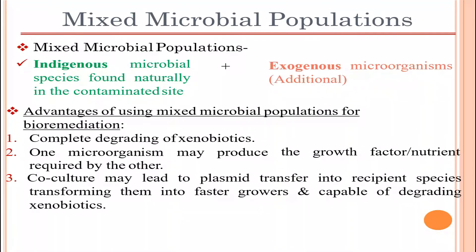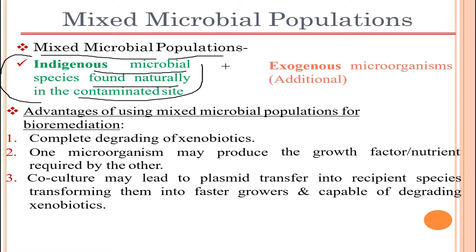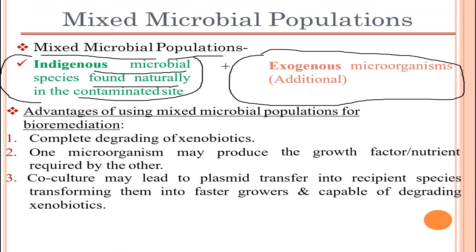Moving on to the mixed microbial population. The mixed microbial population is the combination of indigenous and exogenous microorganisms. Indigenous microbial species are generally found naturally in the contaminated site — microbes which grow over a period of time. Exogenous microorganisms will be studied further. This mixed microbial population is the combination of both indigenous and exogenous microorganisms.